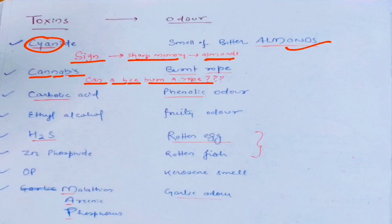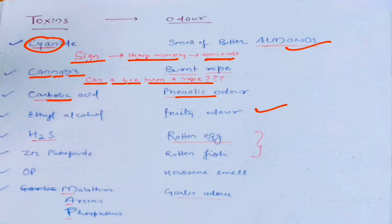The next is carbolic acid — it's very easy, it's almost rhyming: carbolic and phenolic. The next one is alcohol — very easy again, it has a fruity odor. Obviously, alcohol is fruity.